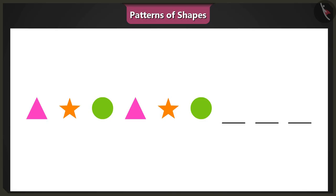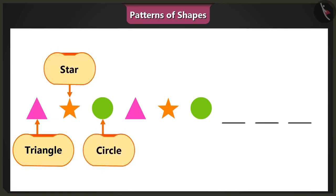Yes, you are right. In this pattern, a pink triangle is followed by an orange star and then appears a green circle.